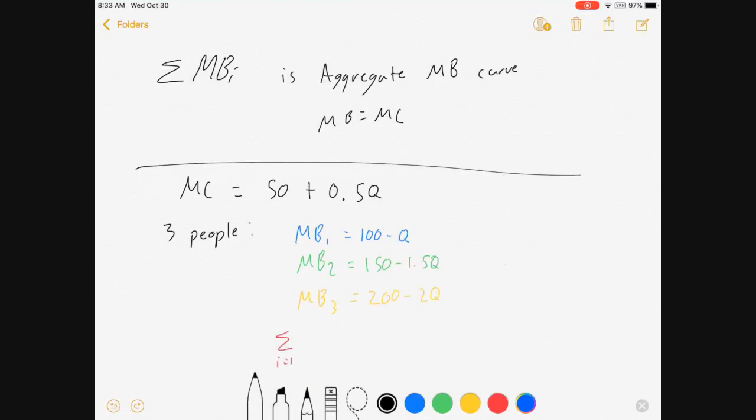Which means if you add up all these benefits from I equals 1 to 3, so adding up the benefits for all the people, what do you get? You get 450, that's 100 plus 150 plus 200, minus 4.5 Q. That's minus Q plus minus 1.5 Q plus minus 2 Q.